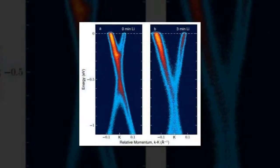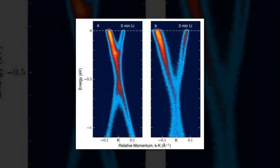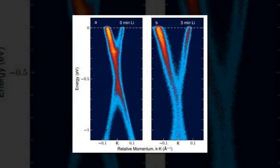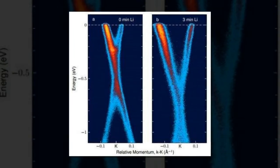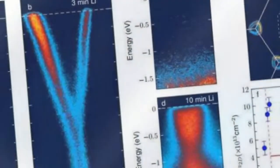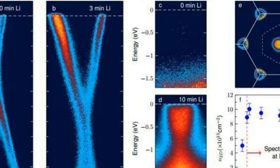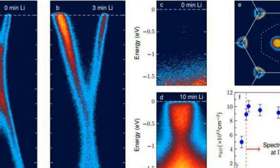In this effort, the researchers first grew samples of graphene on a silicon carbide substrate. Those samples were then placed in a vacuum and cooled to 8K and were then decorated very precisely with a layer of lithium atoms.